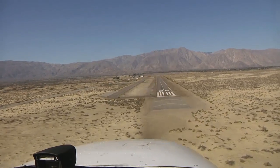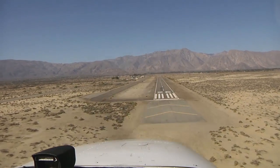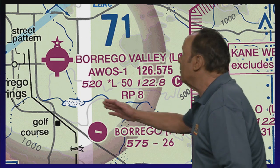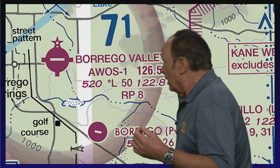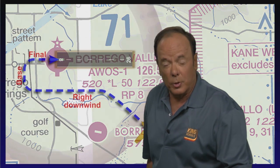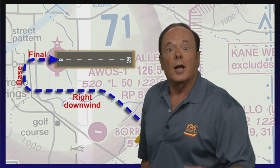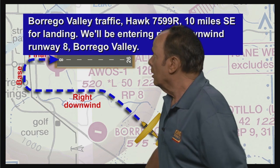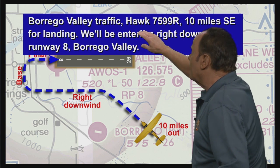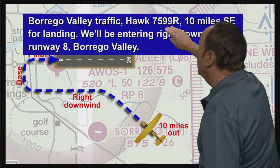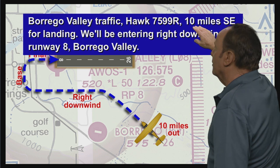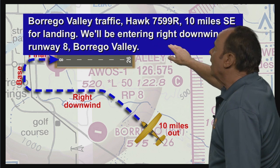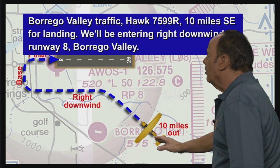Now let's assume that you're inbound to an airport like this. What they want you to do is start listening before you're 10 miles out, and then make your first call on the common traffic advisory frequency 10 miles out. You announce your position and your intentions. You might say: 'Brago Valley traffic, Cessna 7599 Romeo, 10 miles southeast for landing. We'll be entering right downwind runway 8, Brago Valley.'